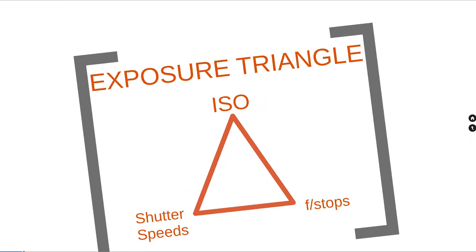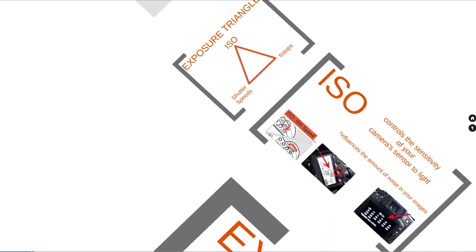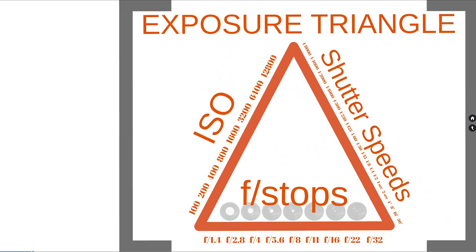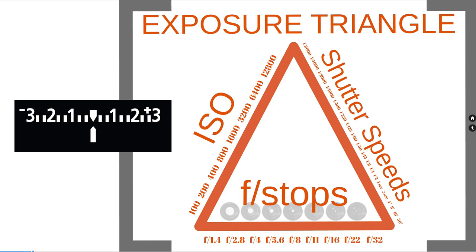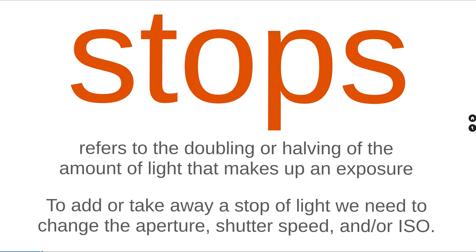Together, they form what is known as the exposure triangle, where each of the three interrelated elements must be balanced in order to achieve correct exposure. The important concept is you need all three in balance to have a correct exposure, and this is regulated by the camera's light meter, which we'll get into later. Let's start our discussion by talking about a stop of light. Understanding what a stop is in photography is the key to understanding the exposure triangle. A stop refers to the doubling or halving of the amount of light that makes up an exposure.